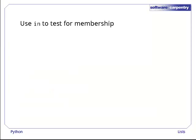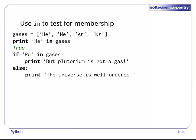Lists.find method tells us where something is in a list, but if we just want to know whether something is there or not, we can use the in operator. Here's our list of gases again. As expected, the expression he in gases is true. In is most often used in if statements, as in this example. Since pu is not in the list gases, this tells us that the universe is well-ordered.